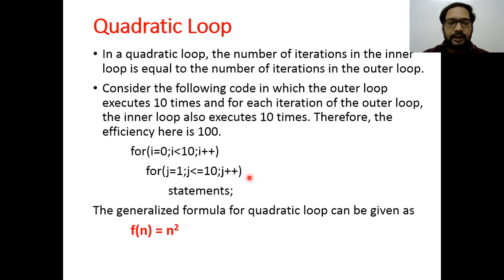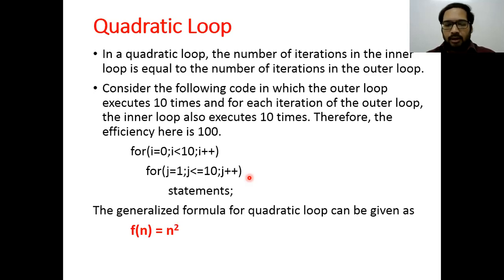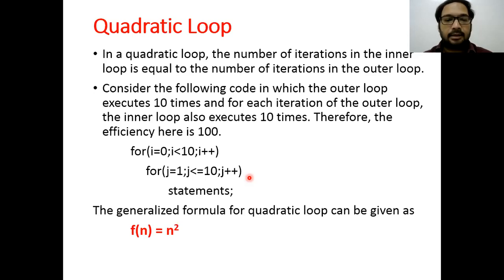If you are using a particular type of loop, your algorithm efficiency is calculated accordingly. For example, if you solve a problem using a single linear loop in one method and two nested loops in another, the efficiencies will differ. A linear loop gives efficiency n, while a quadratic loop gives n². You should prefer the method with lower efficiency — in this case n — since it is more optimal.